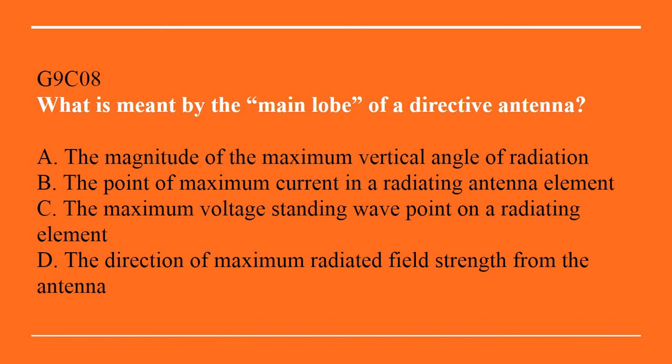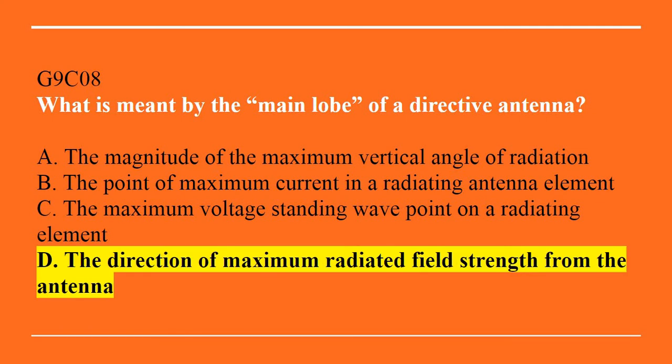G9C08: What is meant by the main lobe of a directive antenna? A. The magnitude of the maximum vertical angle of radiation. B. The point of maximum current in a radiating antenna element. C. The maximum voltage standing wave point on a radiating element. Or D. The direction of maximum radiated field strength from the antenna. The answer is D — the direction of maximum radiated field strength from the antenna.